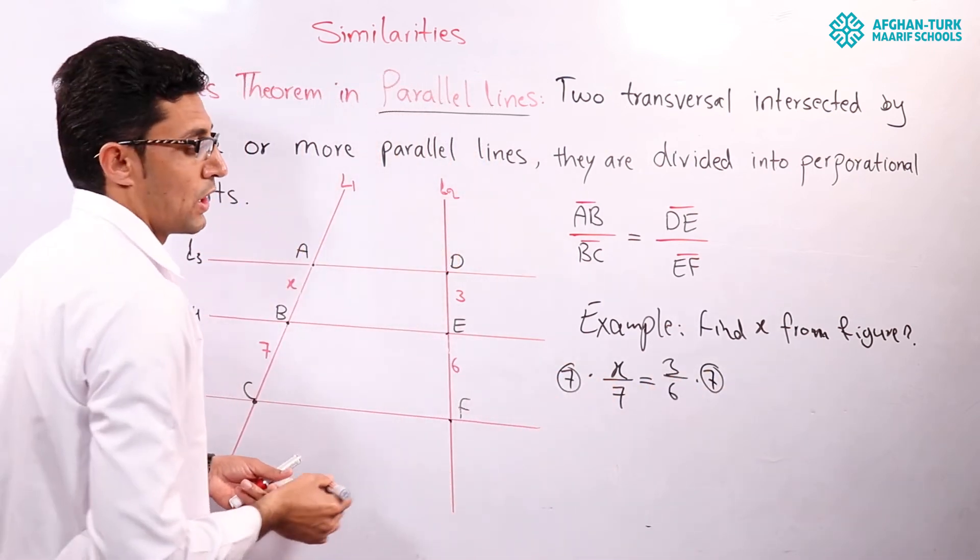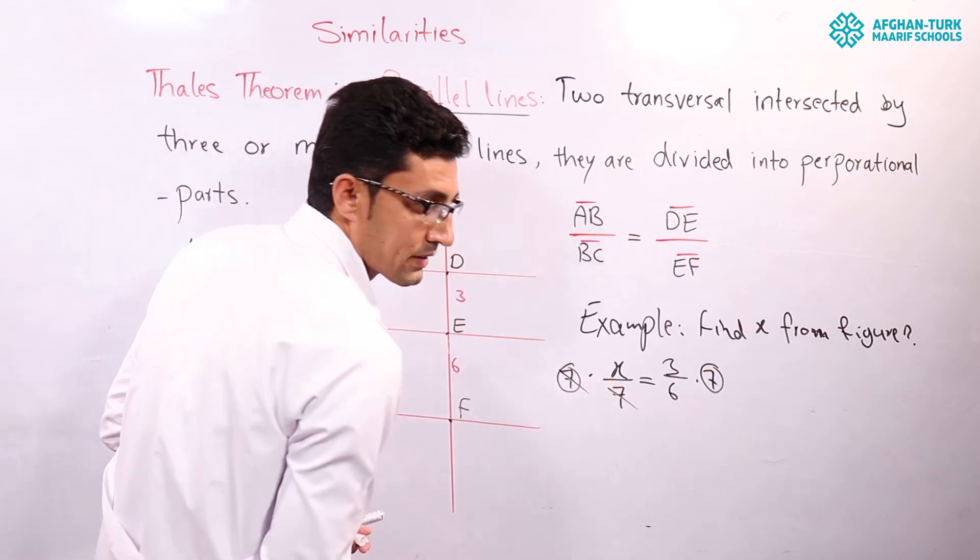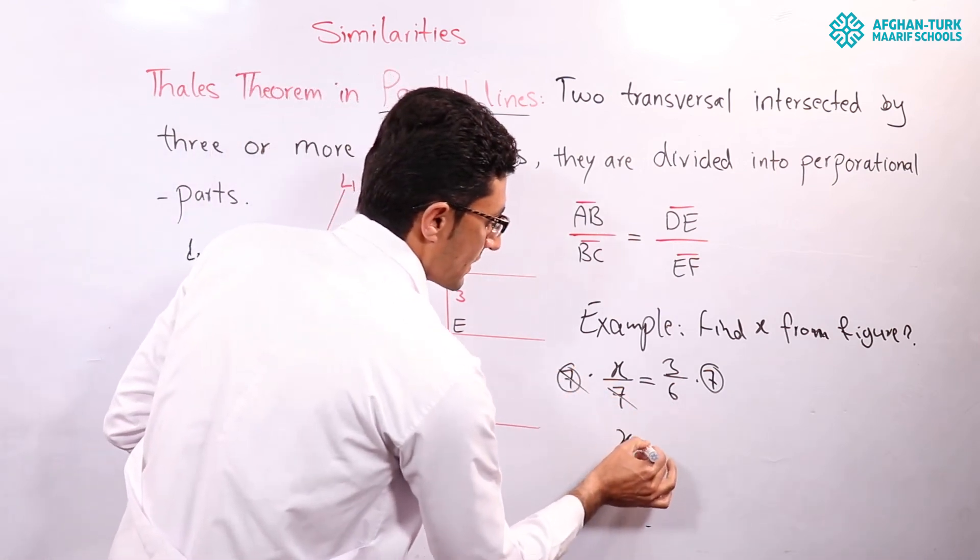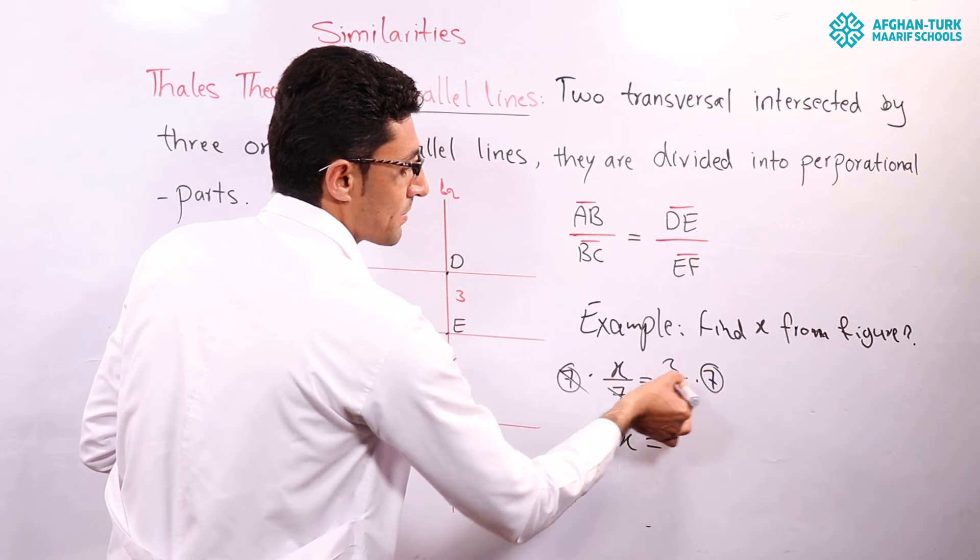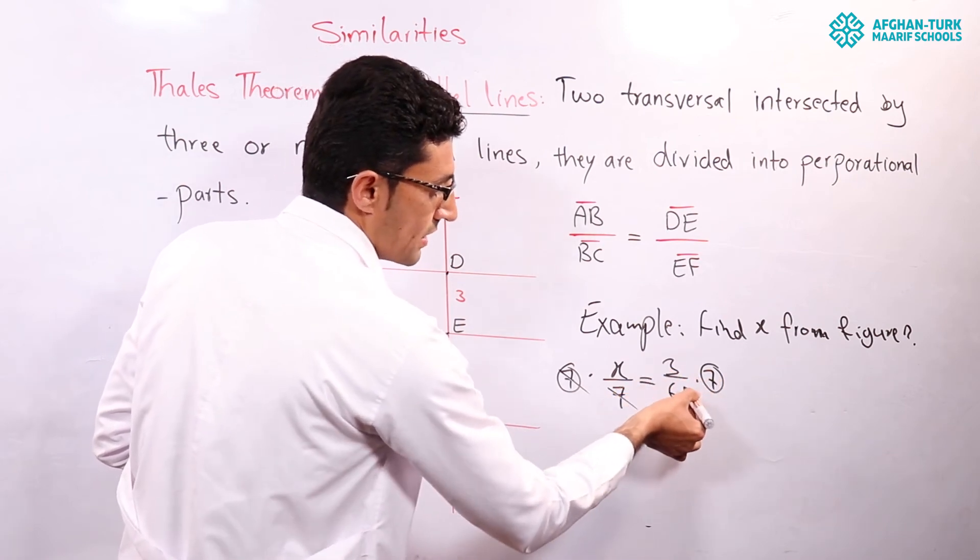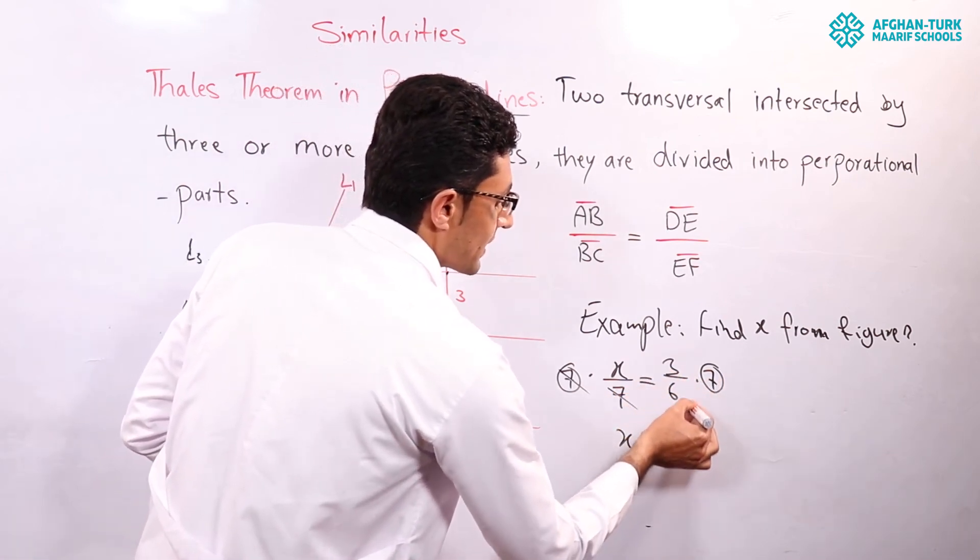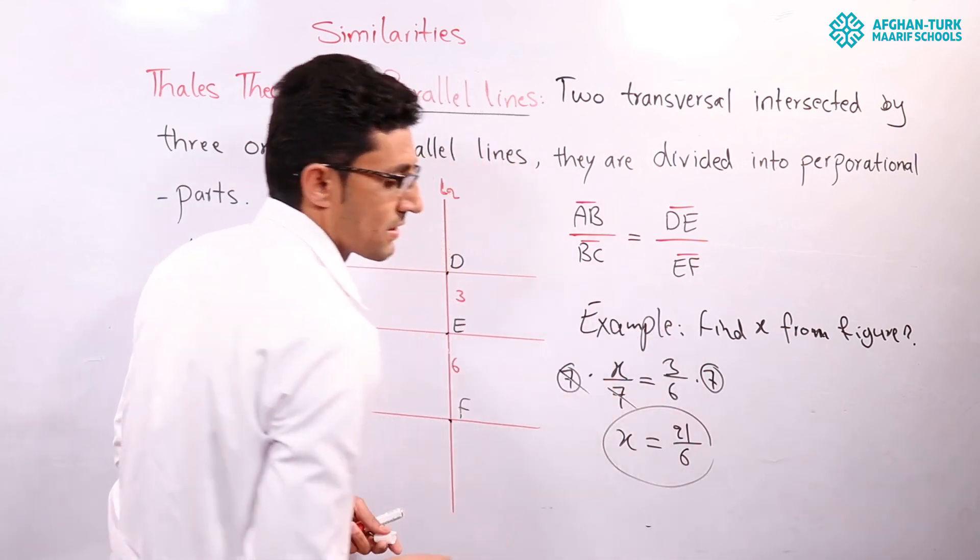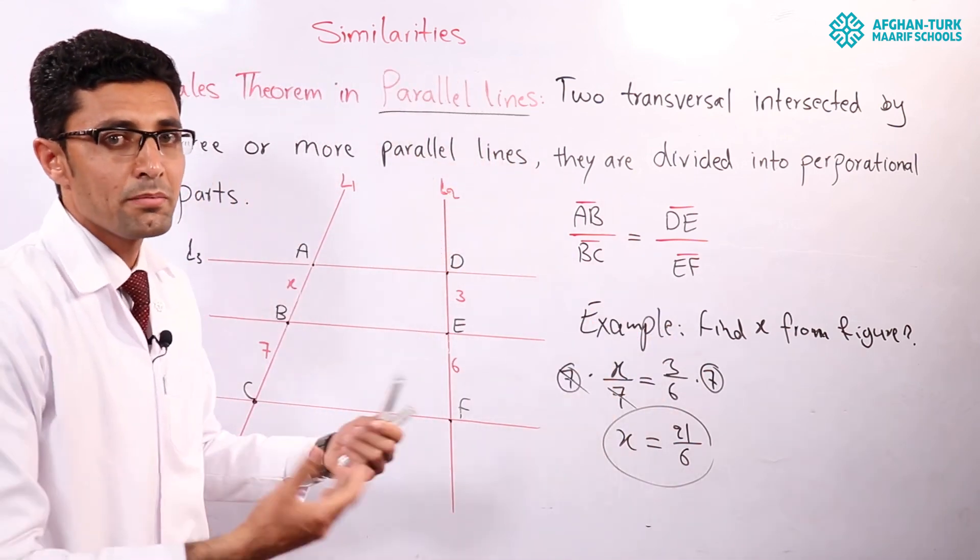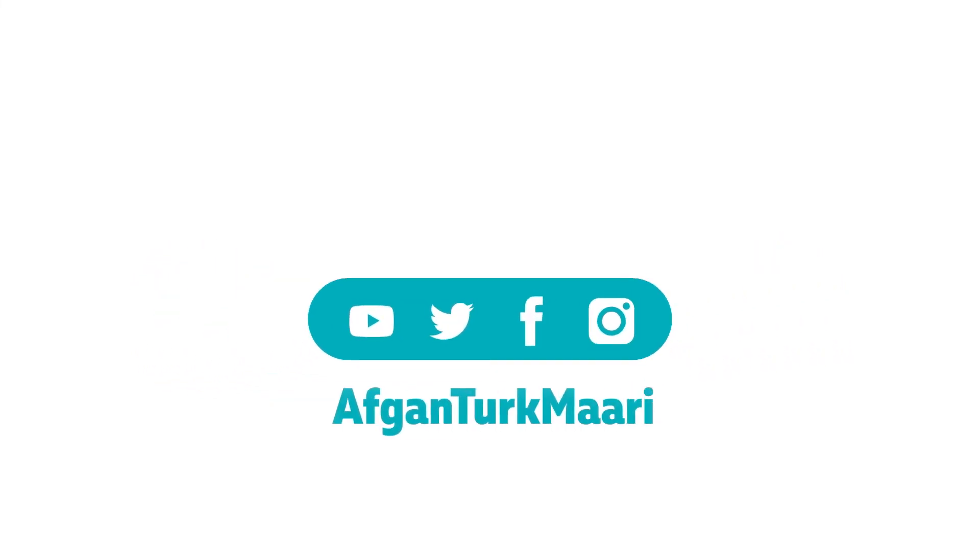Yes. Seven will be cancelled by seven. What is the answer? X equals seven times three, or seven multiple three, is twenty-one divided by six. This is the answer. If it was possible to simplify, okay, if otherwise, this is the answer for X.